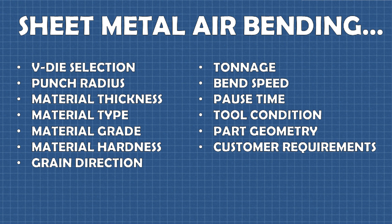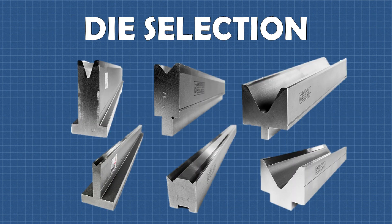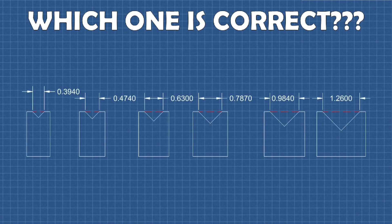With so many variables to consider, sheet metal air bending is sometimes considered an art. As this video will show, however, that is not usually the case. One key variable is die opening or v-size. It affects the radius of the bend, which in turn affects the bend deduction, which in turn affects the accuracy of the flange lengths and ultimately the quality of the finished part.